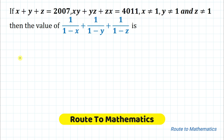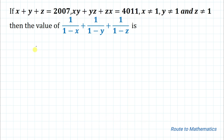Hello everyone, welcome to Root 2 Mathematics. In this video we're going to solve an interesting algebraic question. The given question is: if x plus y plus z equals 2007, and xy plus yz plus zx equals 4011, and x, y, and z are not equal to 1, then find the value of 1/(1-x) plus 1/(1-y) plus 1/(1-z).